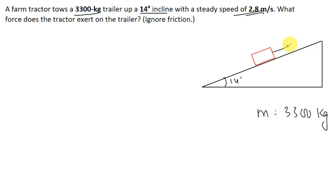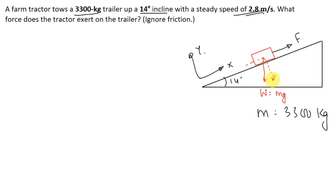Taking the positive X direction along the incline and positive Y perpendicular to it, we draw the free body diagram. The weight force W equals mg acts vertically downward with components W_X along X and W_Y along Y. Since the object moves with constant velocity, the acceleration is zero, meaning the net force acting on the body is zero from Newton's second law.